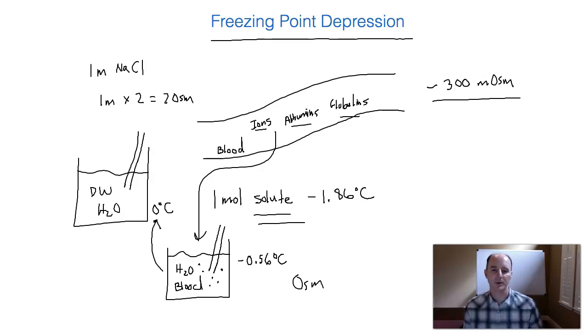So we can do a simple mathematical problem where we take negative 0.56 degrees C, and we divide it by the freezing point depression of water, which is negative 1.86 degrees Celsius. And we know that degrees Celsius is going to go away. And we know that this is moles of solute in liters of solution. So we know that this is a concentration. And so what it's really giving us is osmolality.